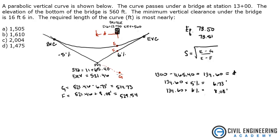Now we have the elevations at G and F. To find the elevation at E, we use the minimum vertical clearance under the bridge, which is 16 foot 6 inches — so 16.5 feet. The curve must meet that clearance requirement. So we take the elevation at the bottom of the bridge, which is 560 feet, and subtract 16.5 feet, giving us an elevation of 543.5 feet for point E.